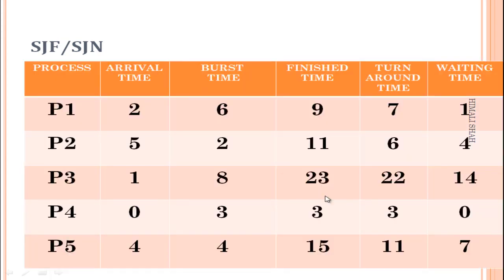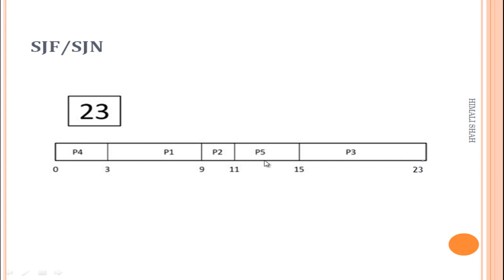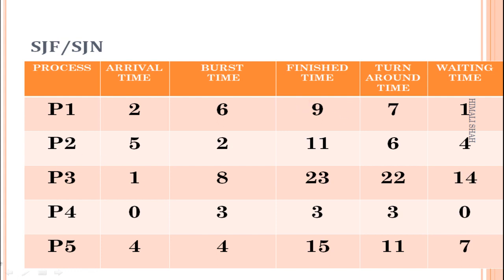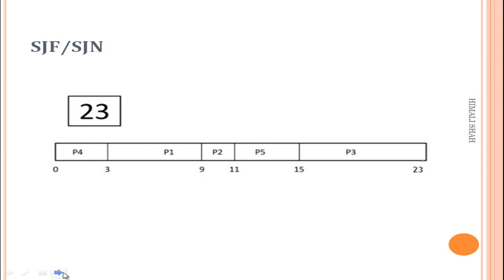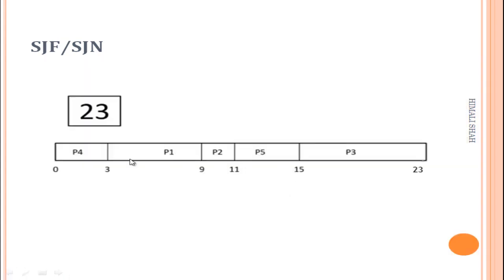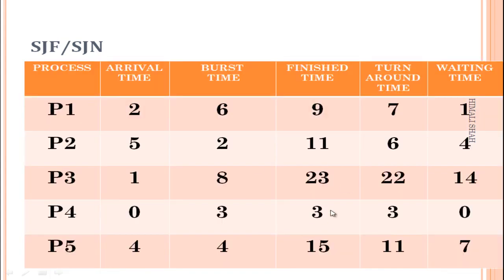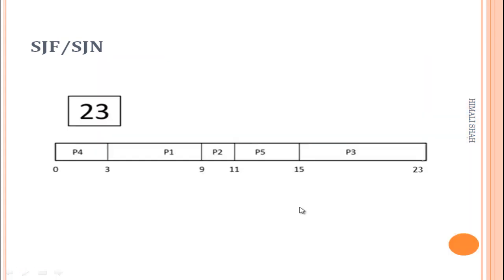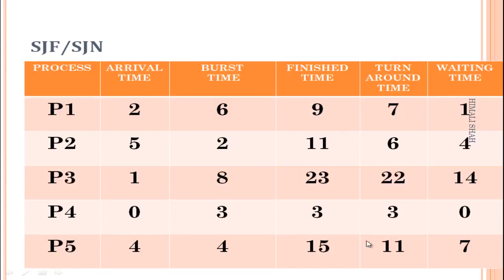Now we make a table with columns: process, arrival time, burst time, finish time, turnaround time, and waiting time. Finish times: P1 = 9, P2 = 11, P3 = 23, P4 = 3, P5 = 15.